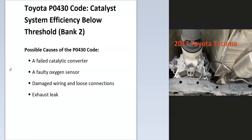Bank 2 is always the side of the engine opposite of the number one cylinder. If you have a V6 or V8 engine, you find the side with the number one spark plug and that'll be bank 1. The opposite side of that is bank 2, and that's the side that the computer is seeing an issue with.